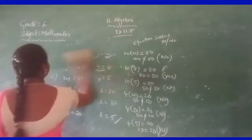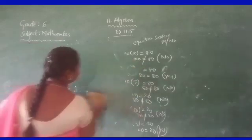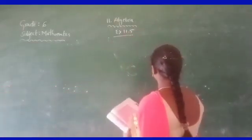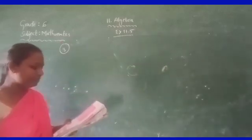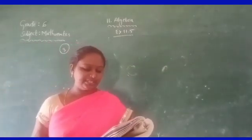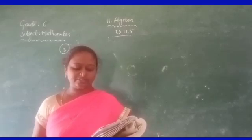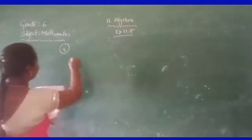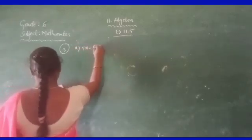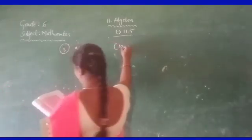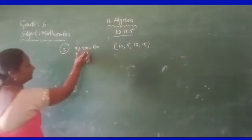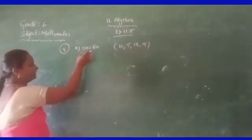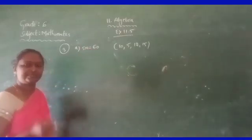Now, third question. Pick out the solution from the values given in brackets next to each equation, and show that the other values do not satisfy the equation. The equation is 5M is equal to 60, and the variable values to test are 10, 5, 12, and 15. Which one is the solution?